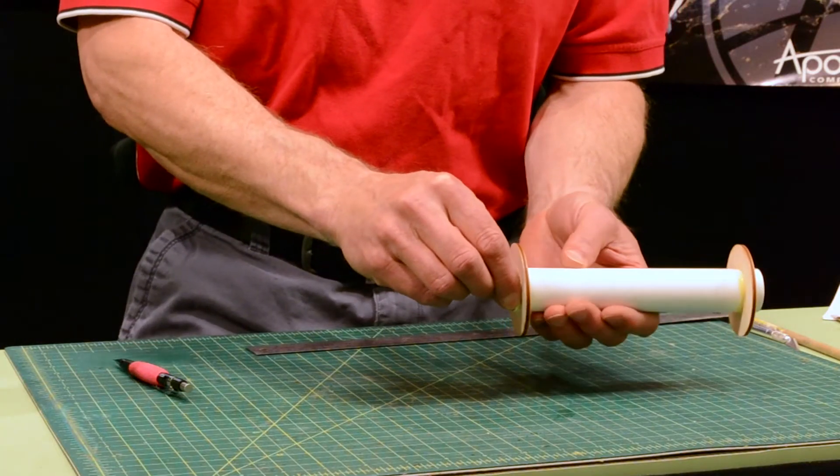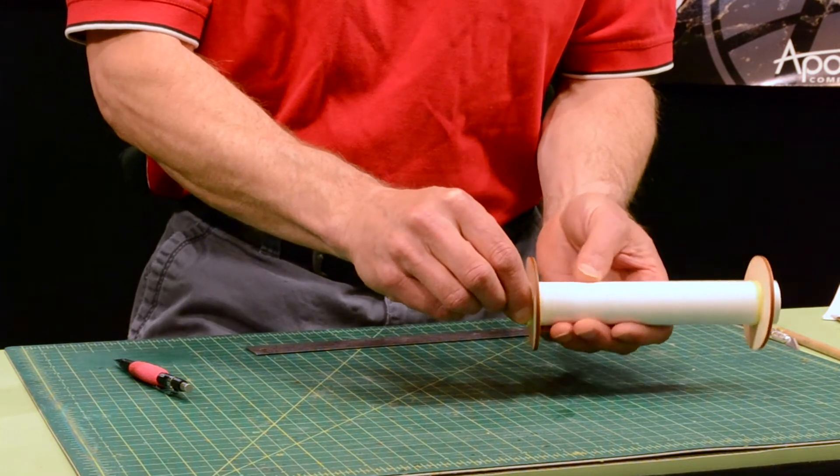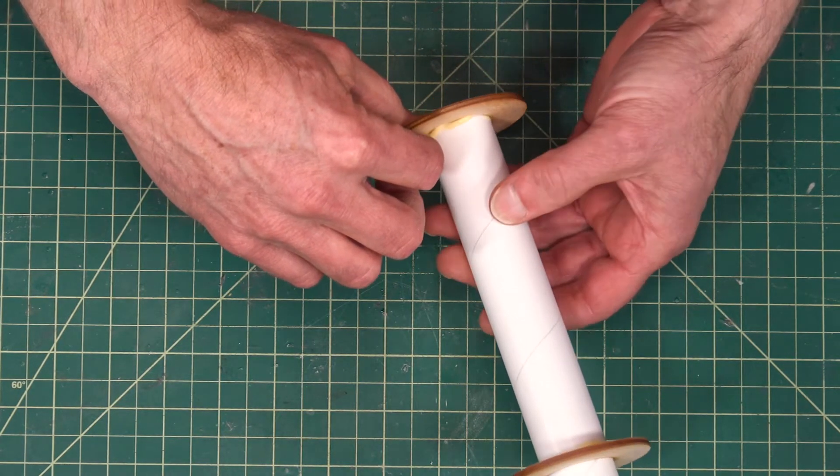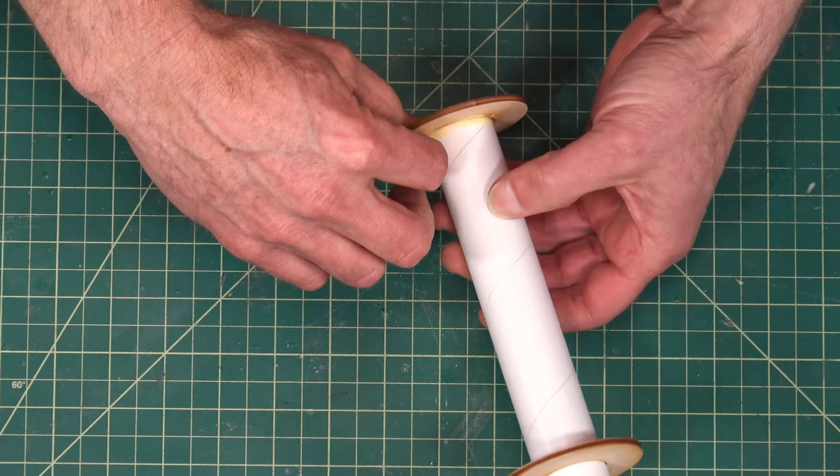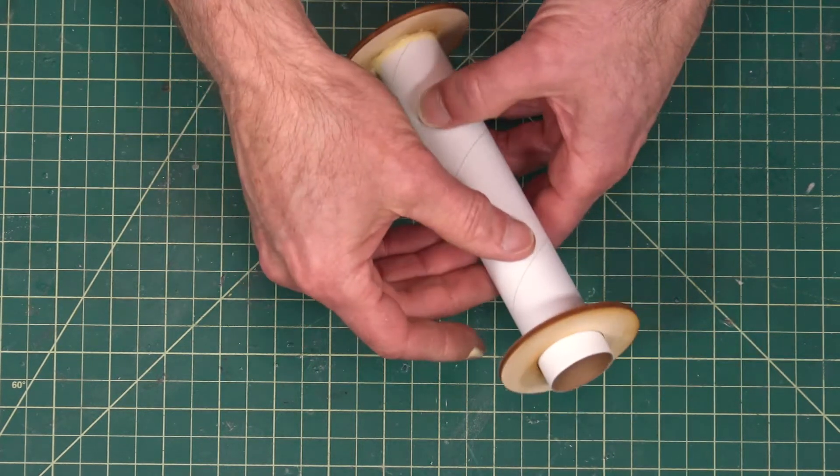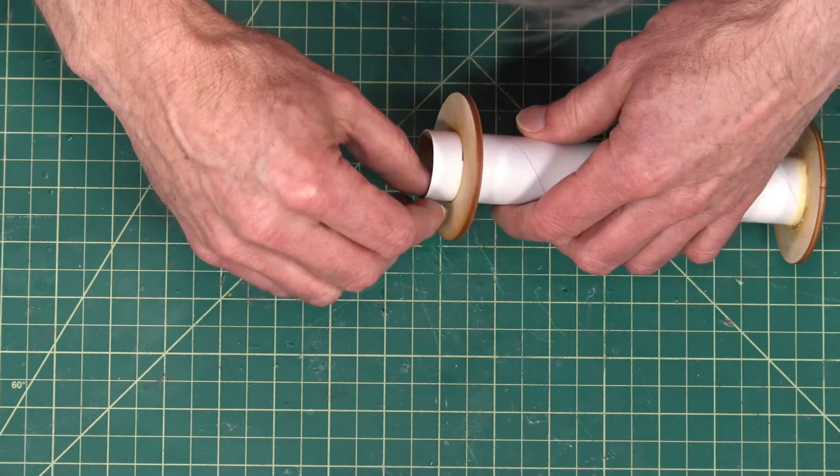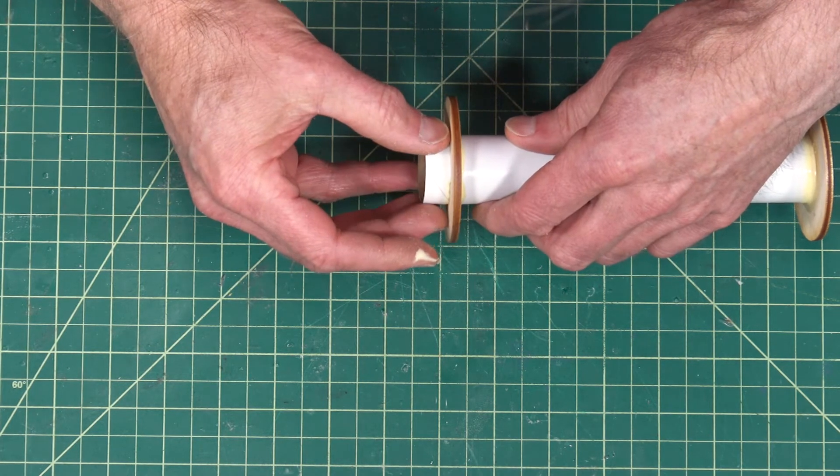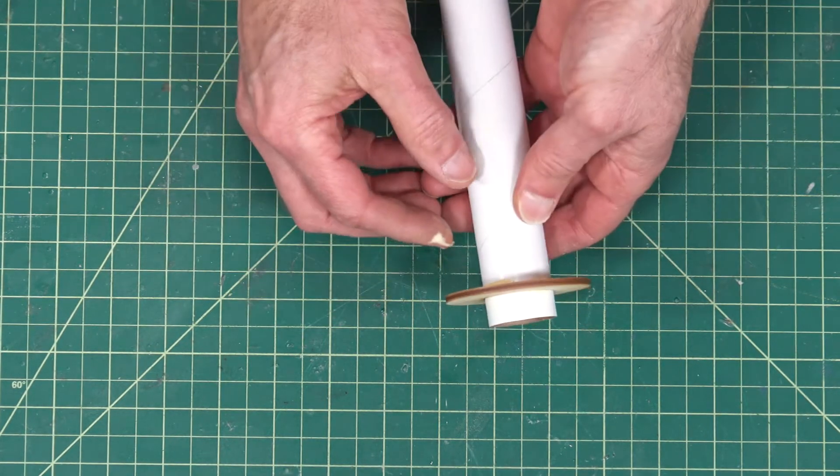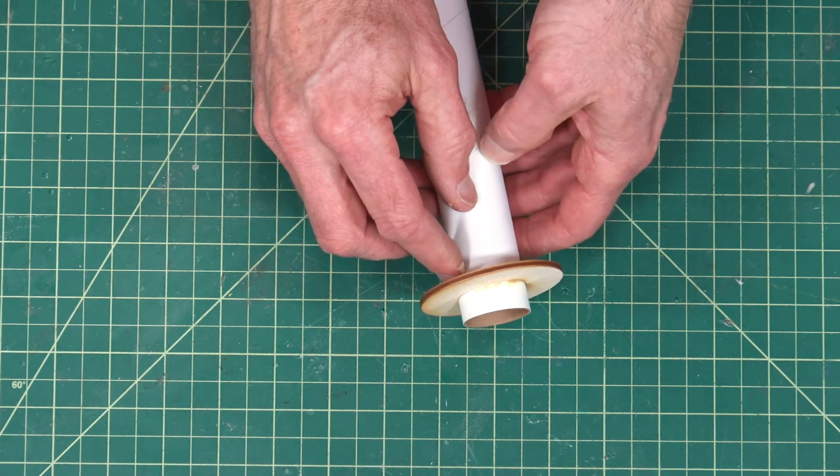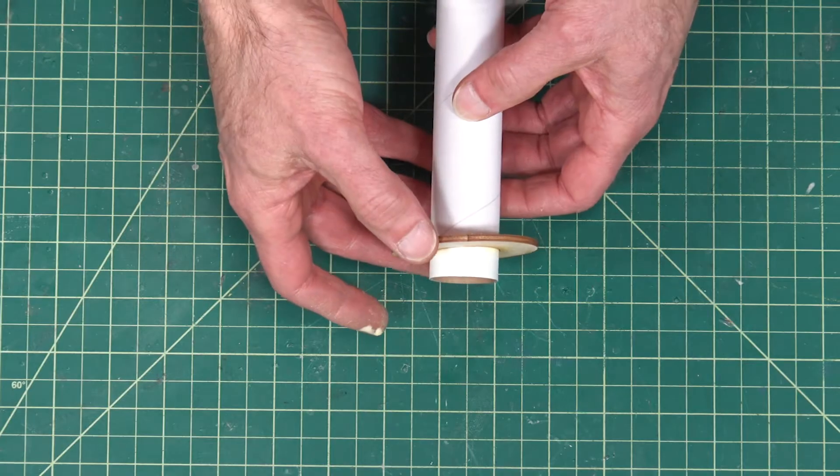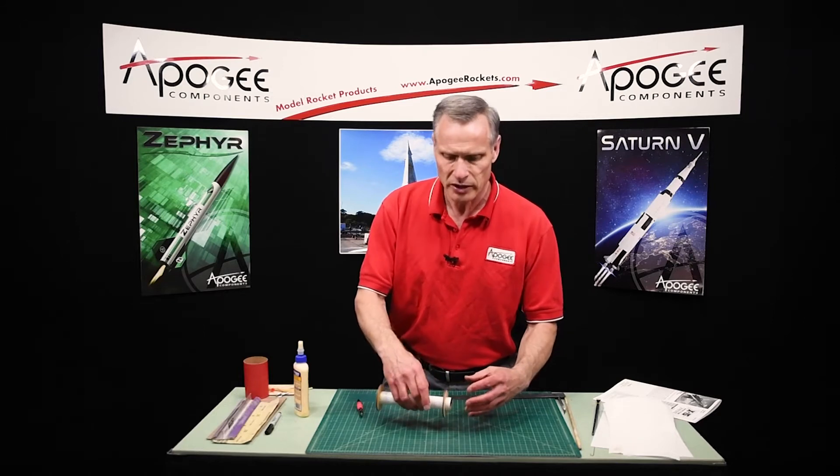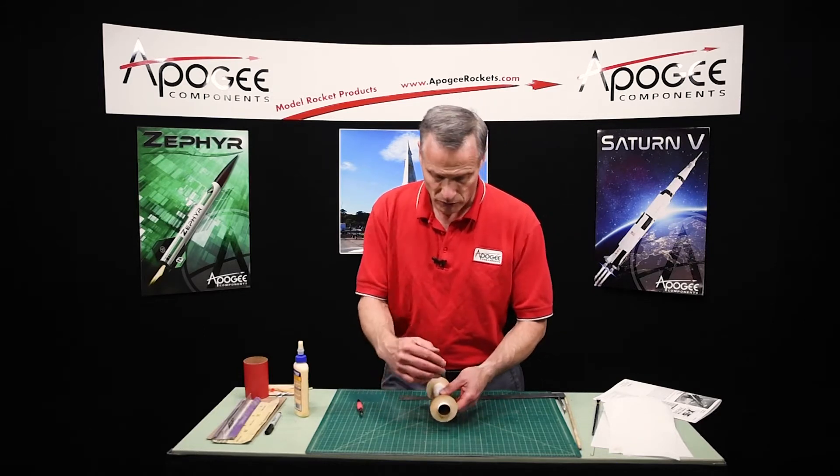Until the glue grabs, it's kind of hard to make a fillet, but you can try your best. Okay, I'm just going to watch that for a few minutes to make sure that it's nice and parallel or perpendicular.